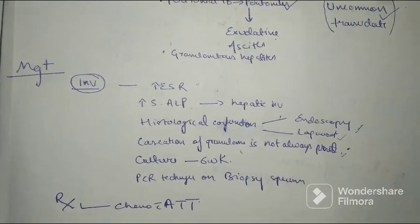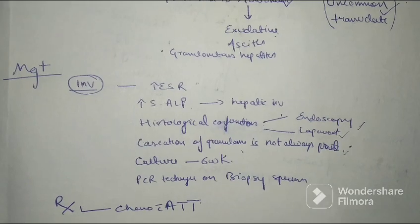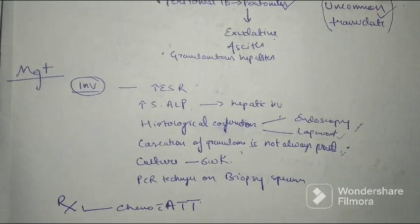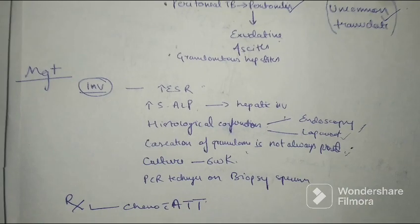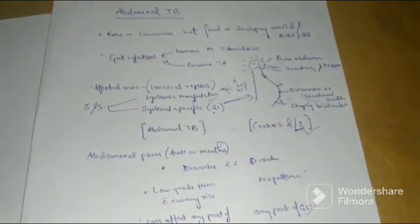Treatment involves chemotherapy with antitubercular drugs: isoniazid, pyrazinamide, ethambutol and rifampicin. Let's talk now about the surgical indications and surgery that are done in case of abdominal TB.